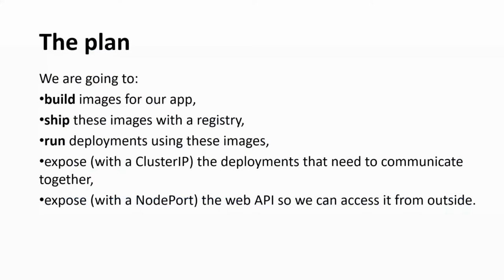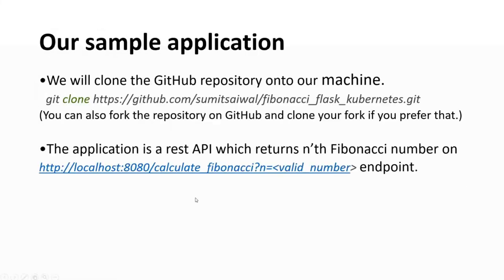We'll build, ship an image and then try to run it. If you want to follow along, you can clone this repo URL, or if you have your own Docker image, you can build and push it to Docker Hub. Otherwise, we can use the one already available in Docker Hub. That's how our sample app is set up.